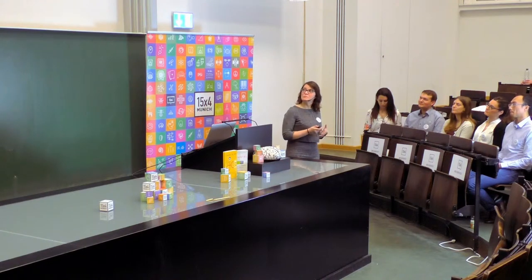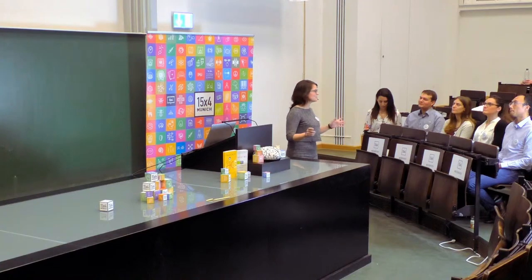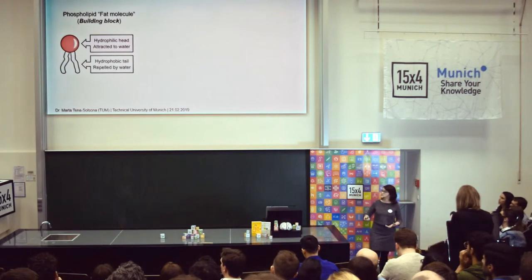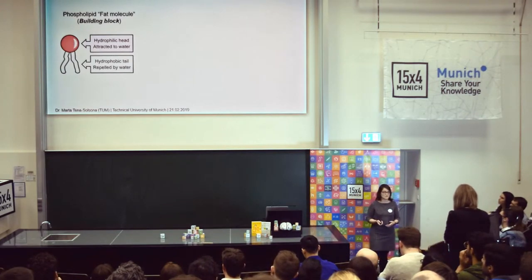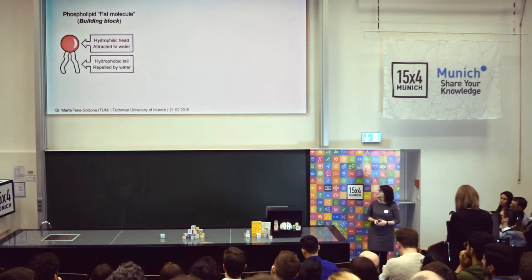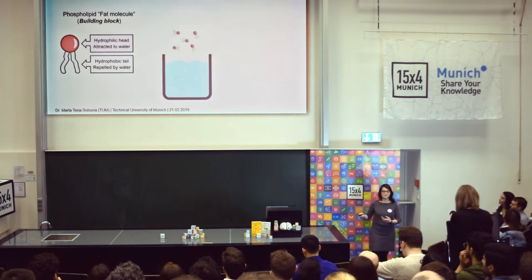To put you more into the topic, I will show you an example from nature, because nature uses every version of molecular interactions. Instead of water, I will show you another molecule called a phospholipid — but we will just call them building blocks. What is important is that this molecule has two different parts: the red head, which is attracted to water, and the white tail, which repels water. So what happens when we try to dissolve these molecules in water?